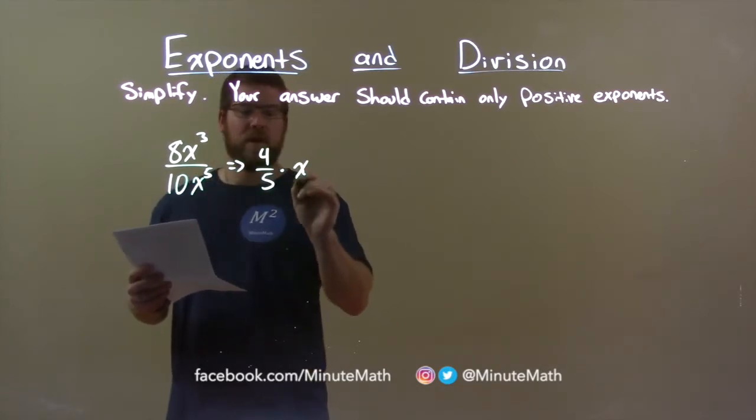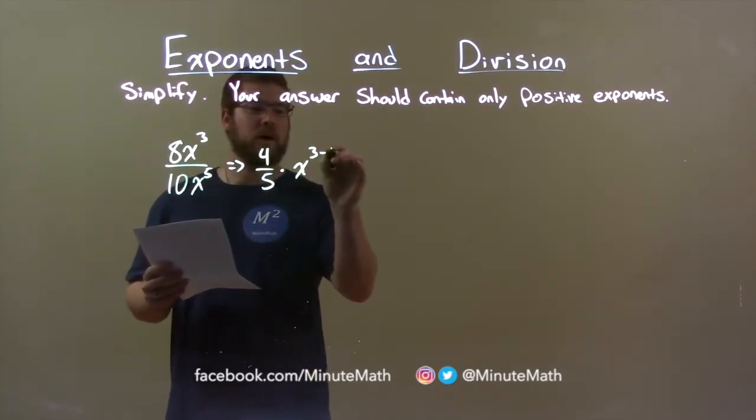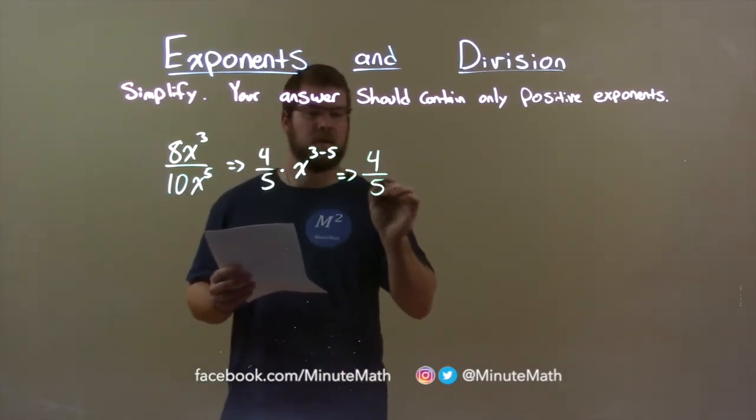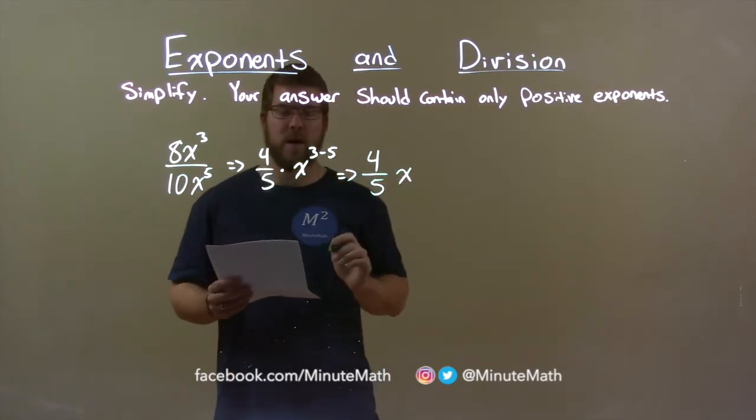So, we have x to the power of 3 minus 5. Keep on going there. 4 fifths still stays there, and x to the 3 minus 5 power.